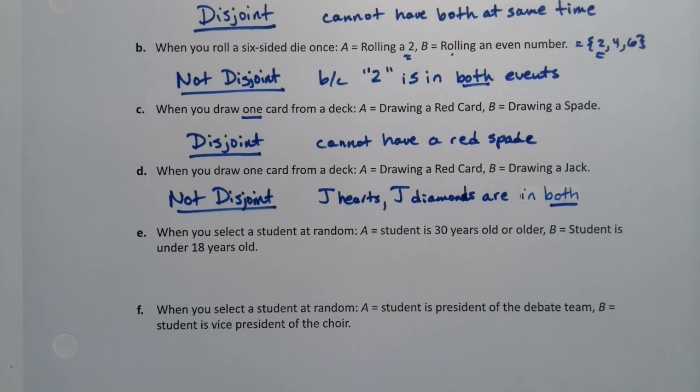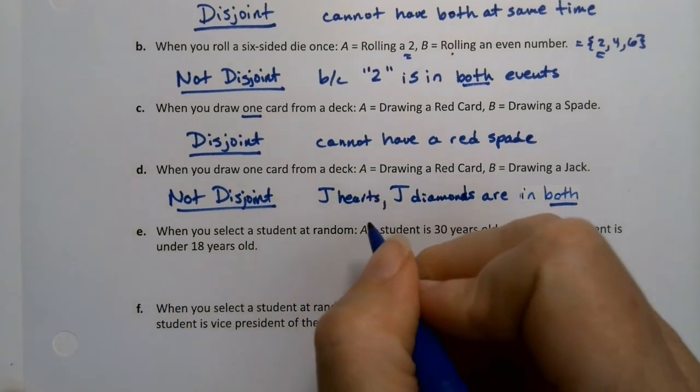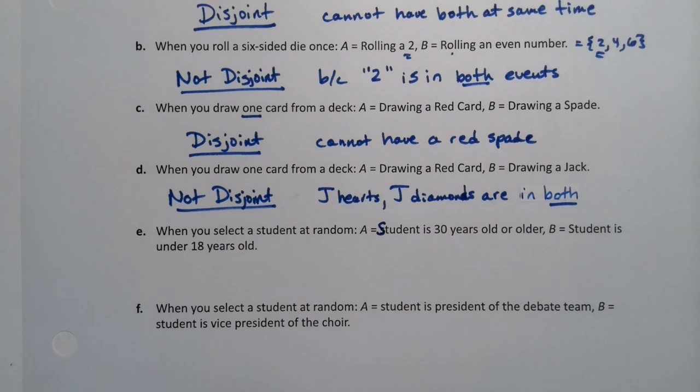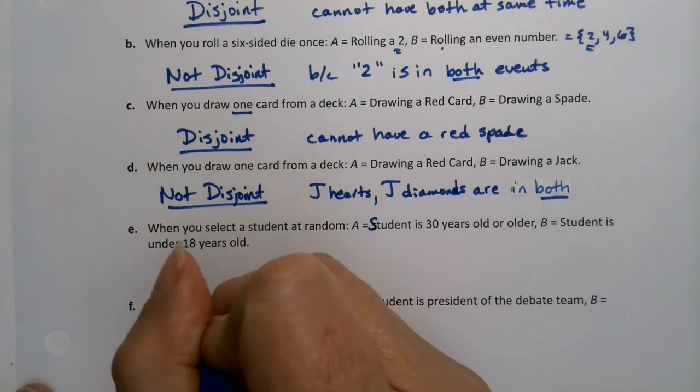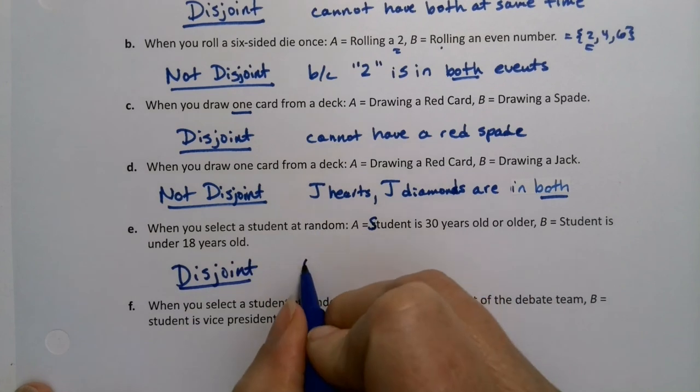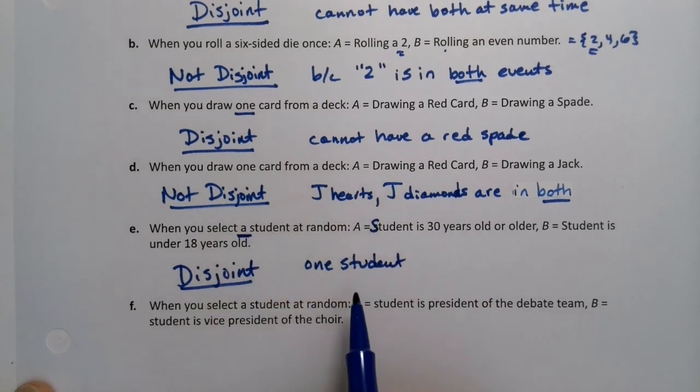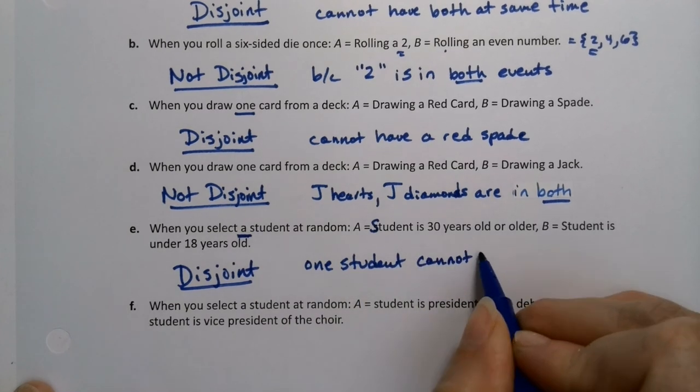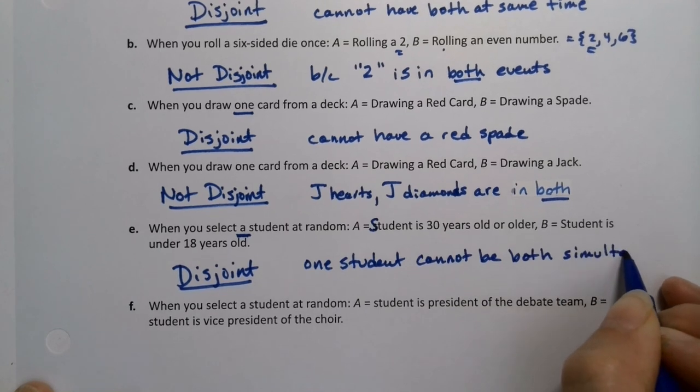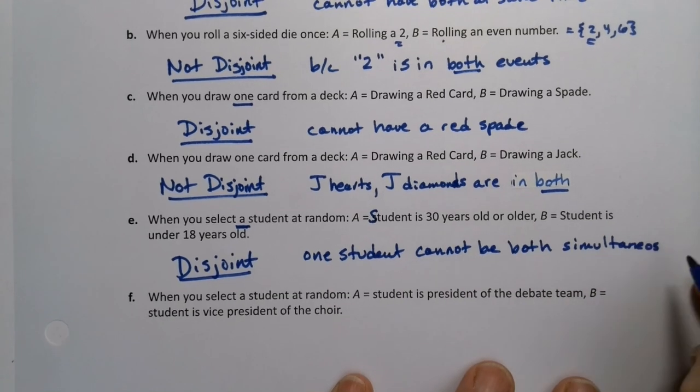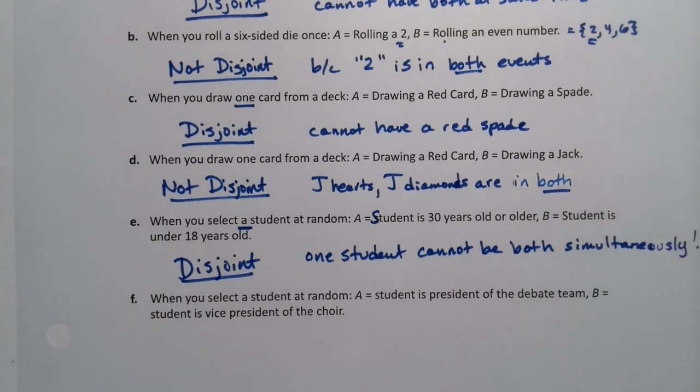You want to select a student at random. The student is 30 years old or older and the student is under 18. Well, if it's one student, the student cannot be both things. A student cannot be both under 18 and over 30 unless they have magical powers. So this is disjoint. You cannot have one student do both of these things simultaneously.